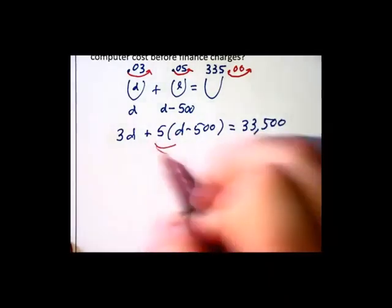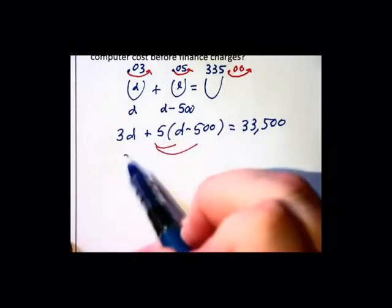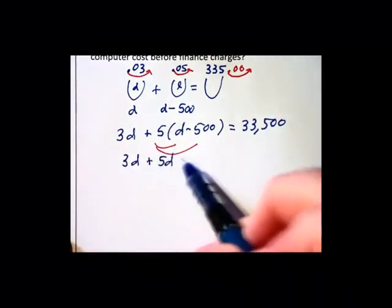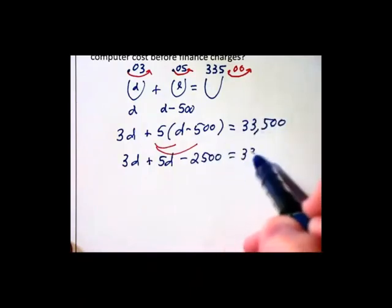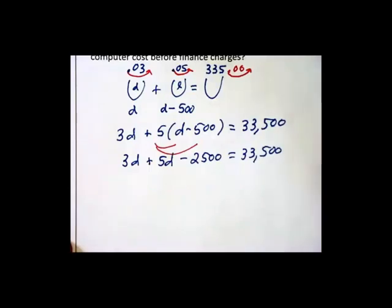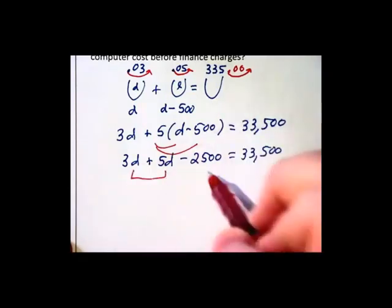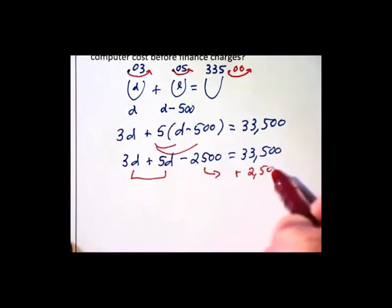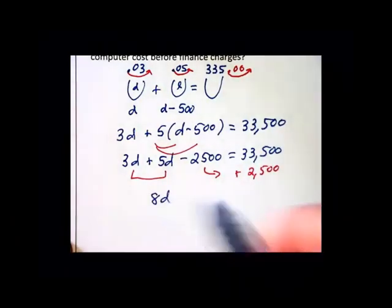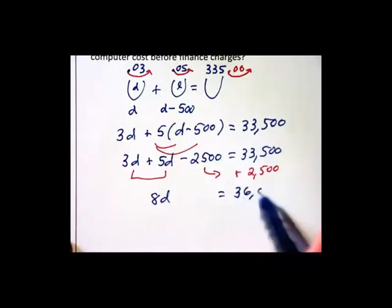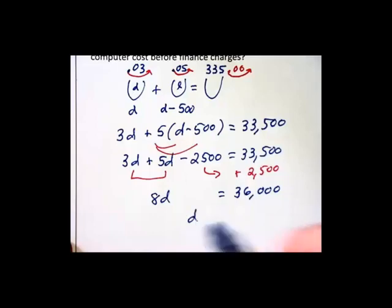We'll do some distribution here. 3D plus 5D minus 2,500 is equal to the 33,500 on the right. We're going to combine like terms and add the 2,500 onto both sides. That is going to give us 8D on the left equals 36,000 on the right. And dividing through by 8 we get D is equal to $4,500 for the cost of the desktop.